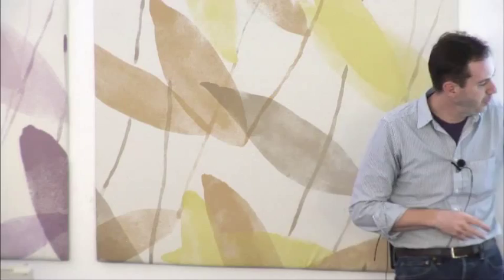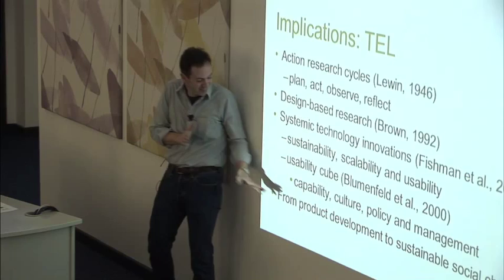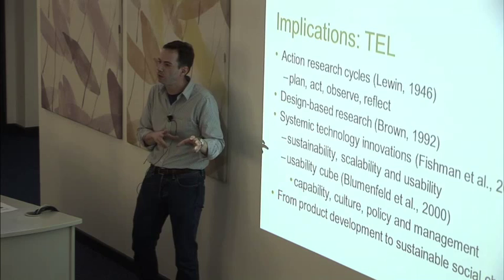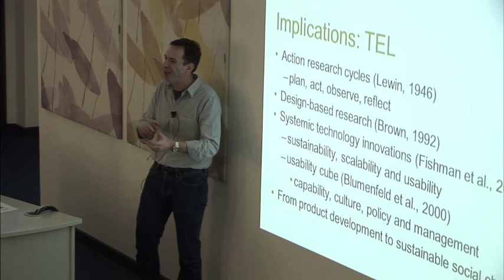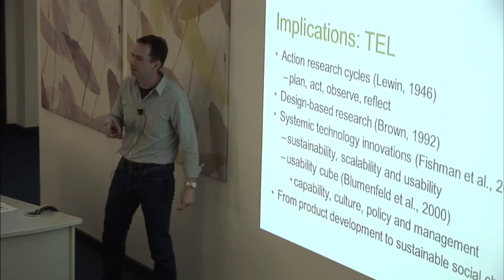Culture is critical — some things you do will be challenging within the cultural norms of an institution. Institutions that don't use technology at all require a big culture change before you start. Policy and management covers how it fits into things like training, development, and recognition. In summary, all of that stuff changes technology and design from product development — 'here's the technology I've produced' — to sustainable change: a different way of teaching, a different way of learning. It's not about technology; it's about the people, their training, their capacity, and all these other things.